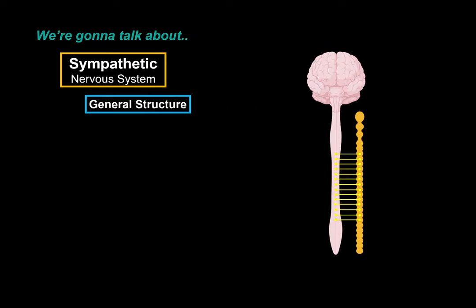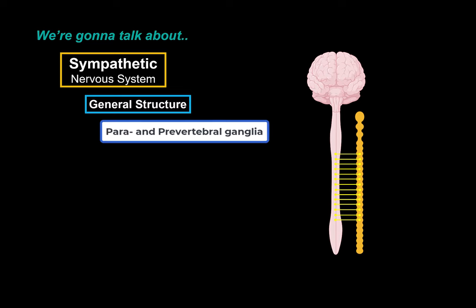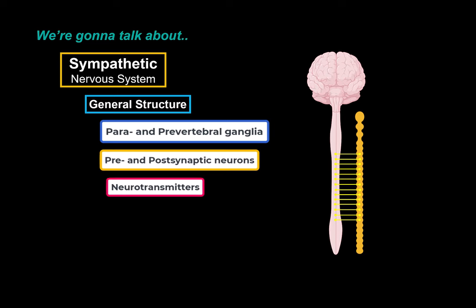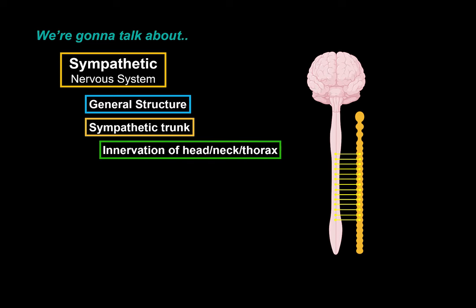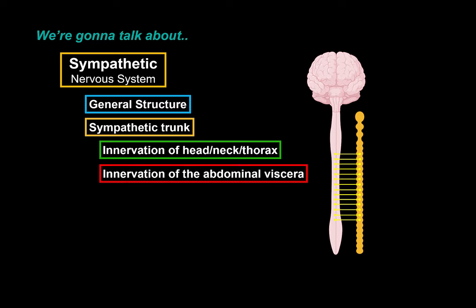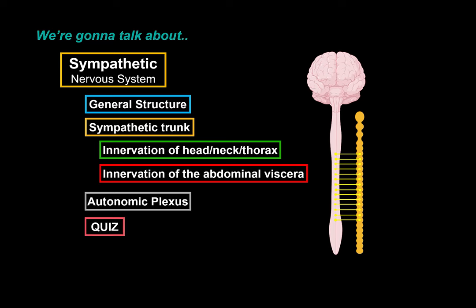We're going to do that by first going through the general structures of the autonomic nervous system — basic concepts like the paravertebral and prevertebral ganglia, pre- and post-synaptic neurons, and which neurotransmitters are released. Then we'll cover the main highway for the sympathetic nervous system, which is the sympathetic trunk or sympathetic chain ganglia, covering innervation of the head, neck and thorax, and then the abdominal and pelvic viscera. I'll also show the relation between plexuses, ganglia, and organs. After the video, there's a little quiz — just a simple check if you paid attention. Let's begin.